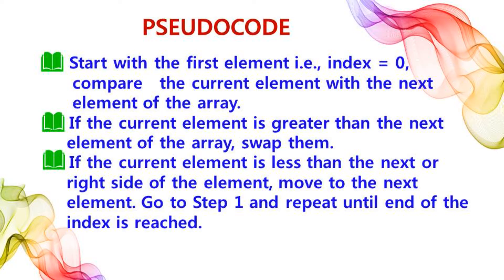The pseudocode for bubble sort algorithm: it compares adjacent elements and swaps them if they are in the wrong order. It starts with the first element, which has index value zero. It compares the current element with the next element. If the current element is greater than the next element, it swaps them, interchanging the positions of the two elements. If the current element is less than the next element, it moves to the next element. These steps continue until the end of the array is reached and the array is sorted.